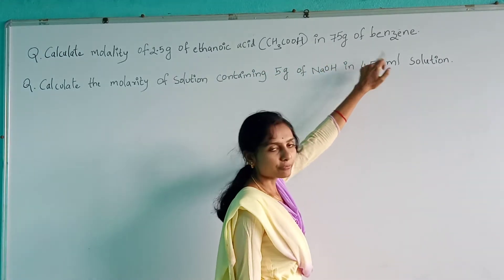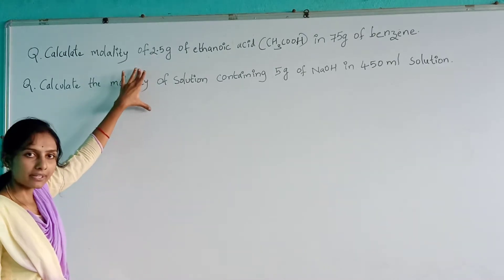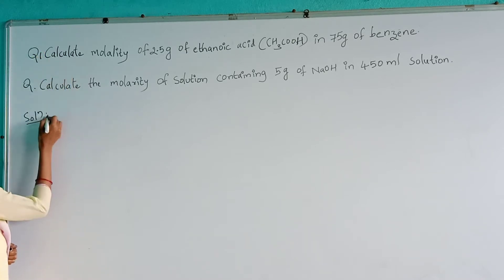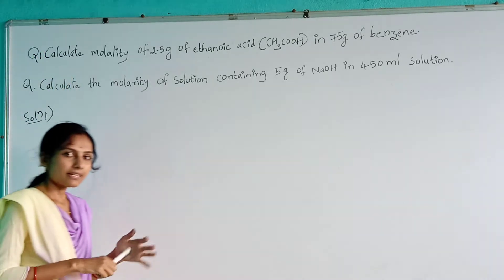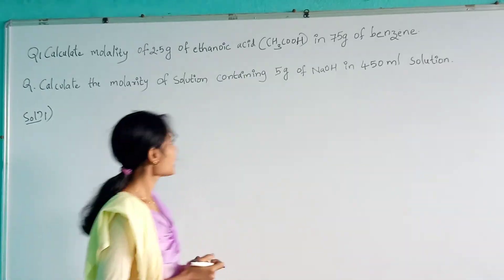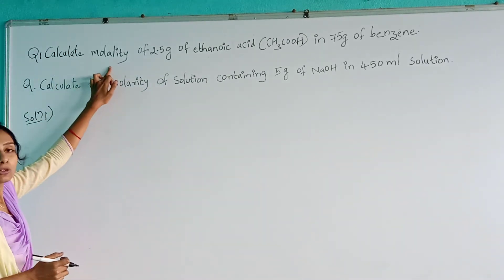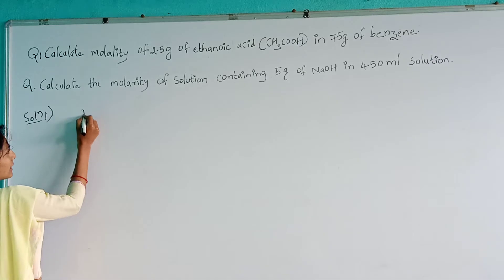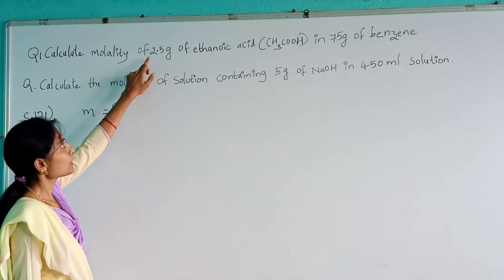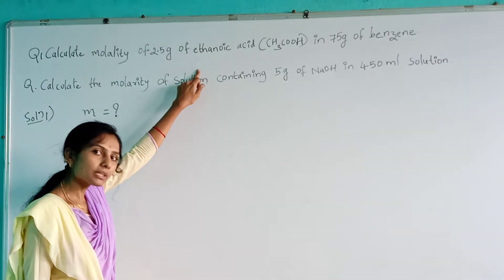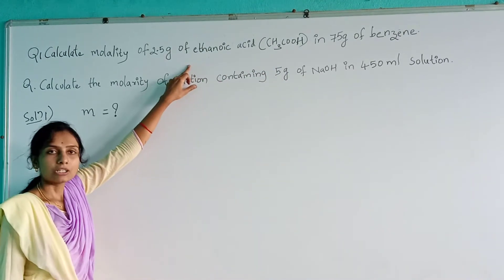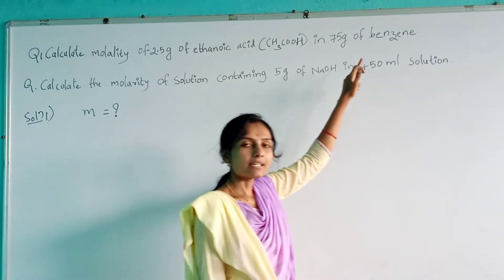In 75 g of benzene. Observe carefully — I am solving this first problem. So what do we have to find? We have to find out the molality, denoted by small letter m. We have 2.5 g of ethanoic acid in 75 g of benzene. Here, ethanoic acid is the solute and benzene is the solvent.